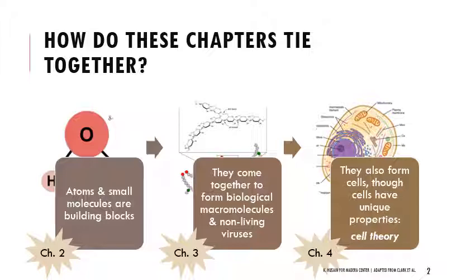So going through chapters two, three, and four today. In chapter two, we're thinking about how atoms and small molecules are the building blocks of life — one of the earliest levels of organization. In chapter three, we'll think about how they come together to form bigger molecules: biological macromolecules and non-living viruses. And then in chapter four, we'll talk about how these building blocks and biological macromolecules form cells, and how cells have their own unique properties grounded in the idea of cell theory.